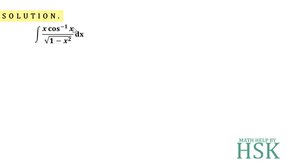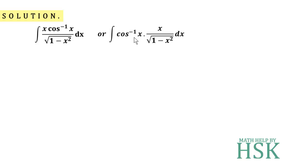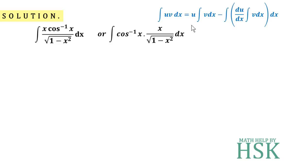To integrate this, I'm going to view this function as the product of two functions: one is cos⁻¹(x), which is an inverse trigonometric function, and the second is x divided by the square root of 1 minus x², which is an algebraic function. So this can be written as the integration of cos⁻¹(x) times x over √(1-x²) with respect to x. To solve this we are going to apply the formula of integration by parts, because it is a product of two functions.